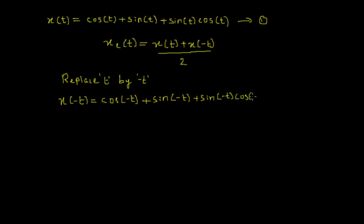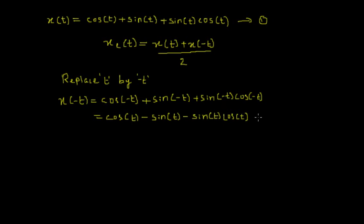Now I can simplify this further. Cosine(-t) equals cosine(t), sine(-t) equals minus sine(t), and minus sine(t) times cosine(-t) gives minus sine(t) times cosine(t). I call this expression 2. To find the even part of the signal, I add equation 1 and equation 2, then divide by 2.